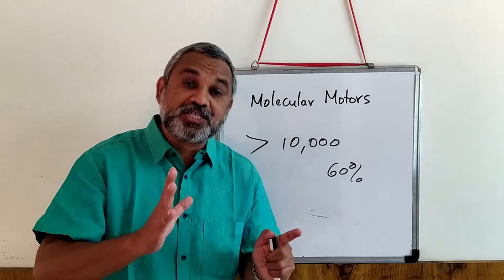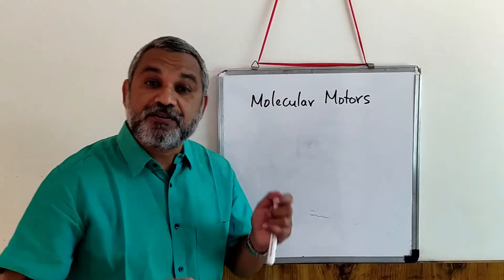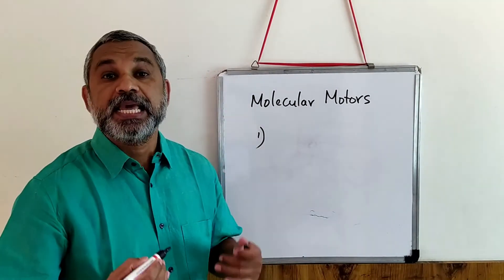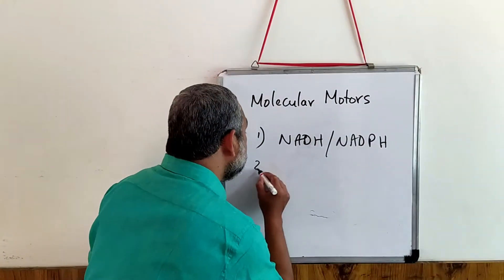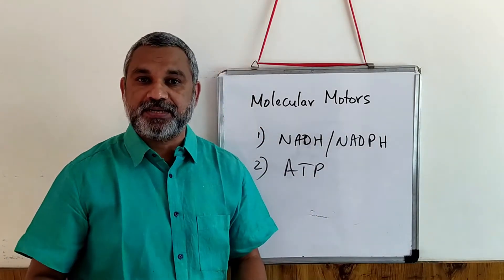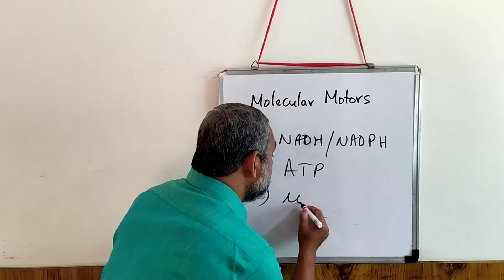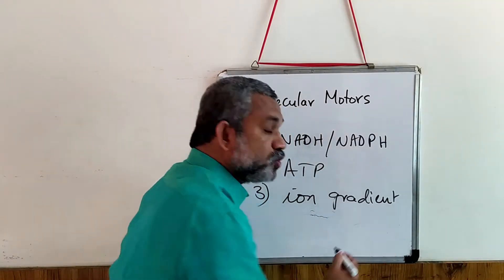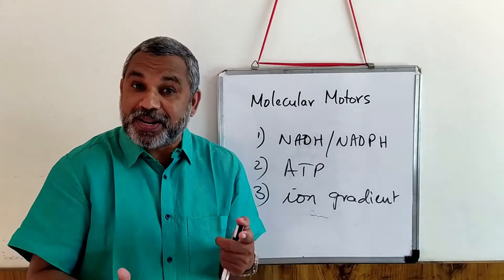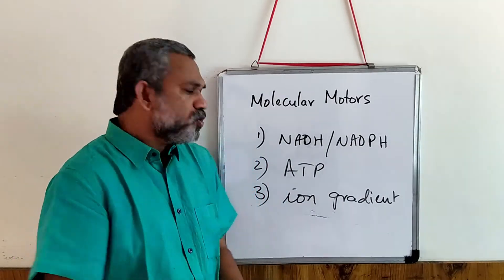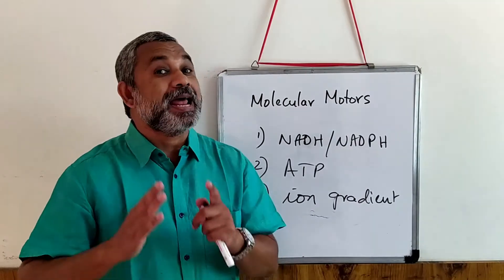All these molecular motors require energy input, and energy is available in three forms. The first form is energy present as reducing equivalents — as NADH or NADPH. Another form is energy present as ATP molecules, as nucleotides. The third form by which energy is available is as an ion gradient — especially when the ion gradient is created against the inner mitochondrial membrane, that gradient can be used for driving reactions. These three forms of energy are utilized for mobility and carrying out functions.